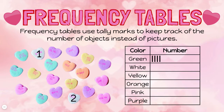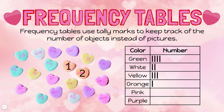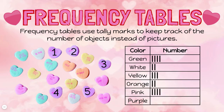Two white candy hearts would be recorded with two tally marks. Three yellow. Two orange. Four pink. And five purple. When I get up to five tally marks, I have to do something kind of special. The fifth tally mark goes diagonally across the group of four, like this, to make a group of five.